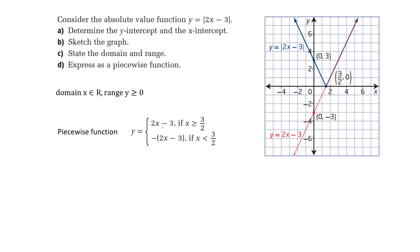Let's consider another example: y equal to absolute value of 2x minus 3. We first draw the line y equal to 2x minus 3, and anything below 0 we just flip up. So the new graph is going to look like this. The domain is x belongs to real numbers, and the range is y greater than or equal to 0.